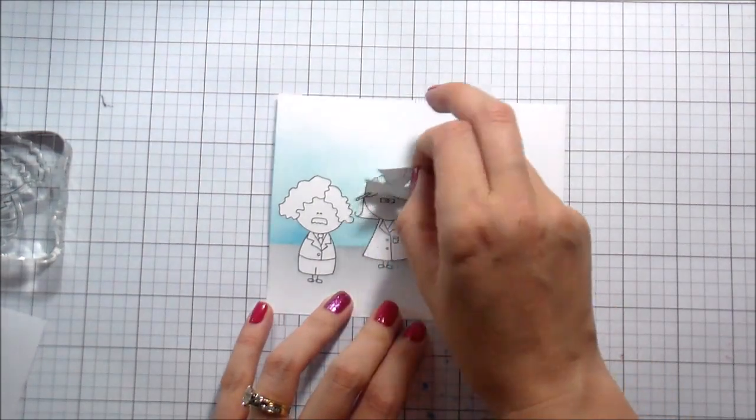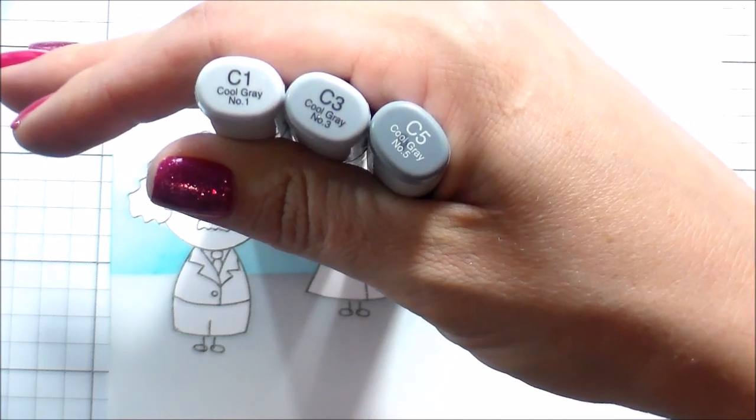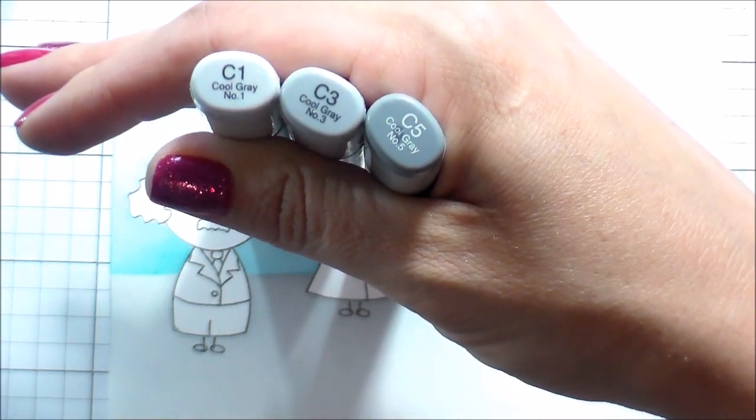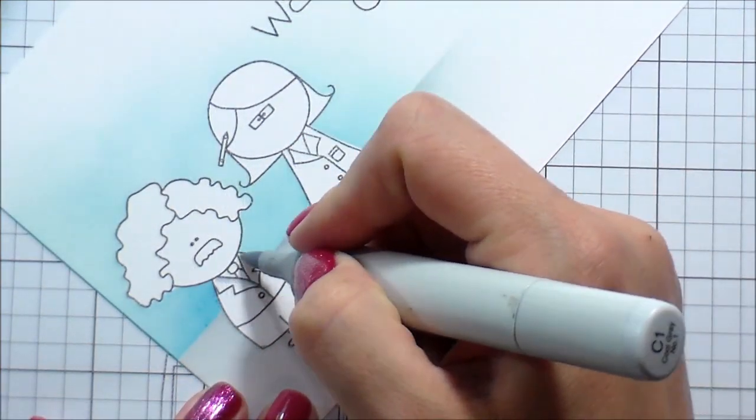I'm going to go ahead and remove my masks and then I'm going to Copic color these little guys. I thought that they were so cute. They get their little lab coats on and this one kind of looks like Albert Einstein with crazy hair there.